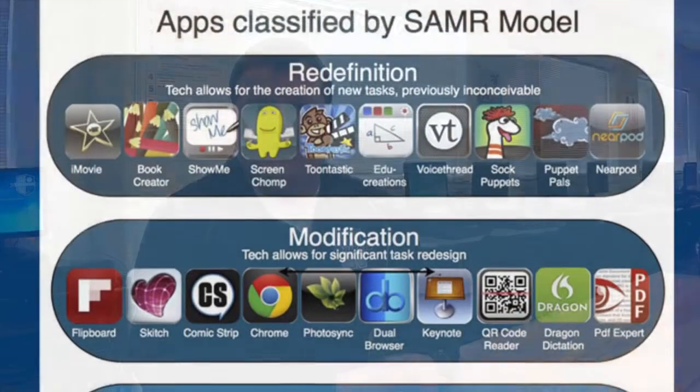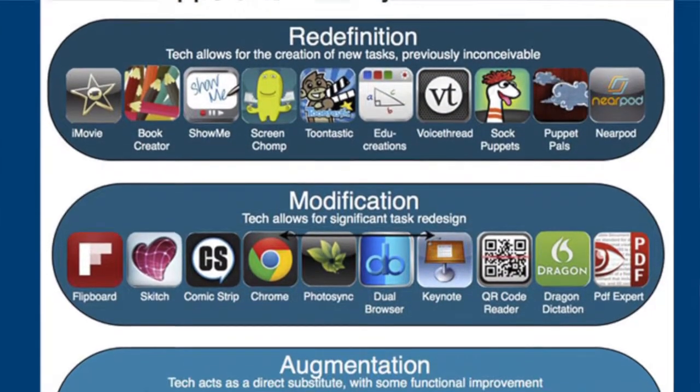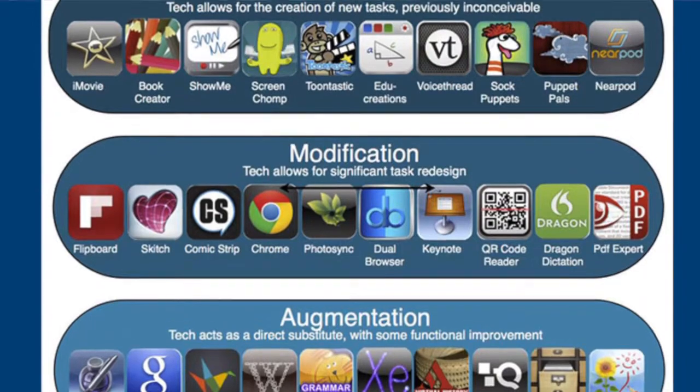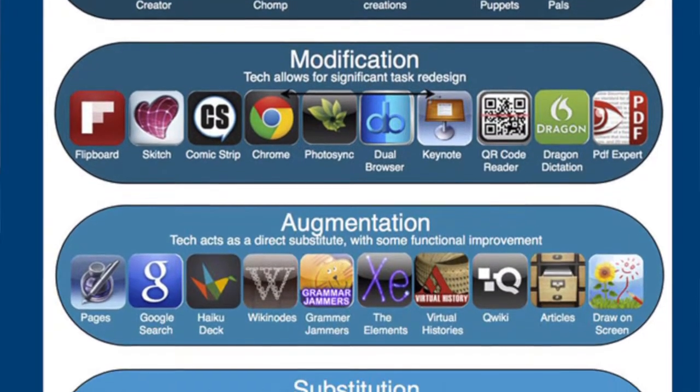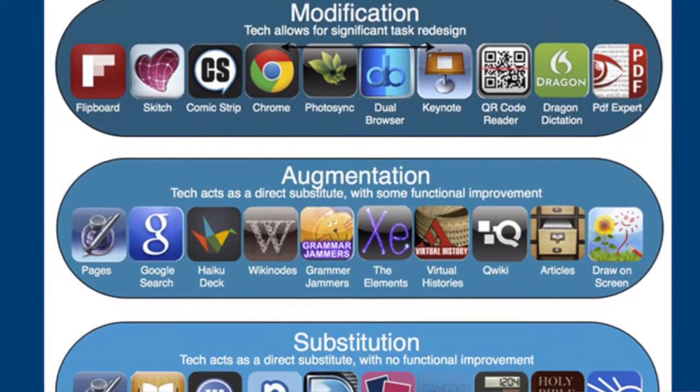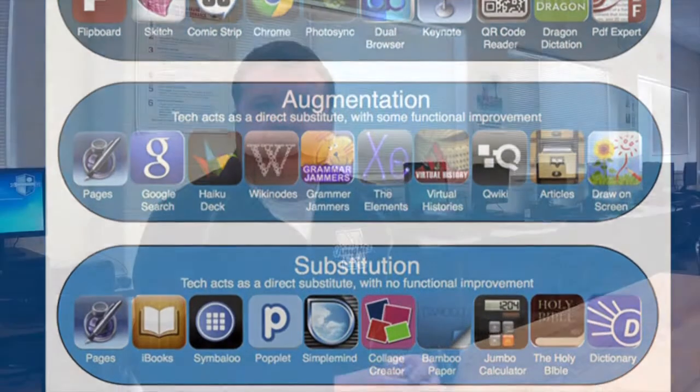I was in charge of introducing to the staff the SAMR model, which I used to represent the multiple levels of differentiation that people have with technology in their classroom environment. The SAMR model represents all sorts of different levels, from very beginner to very advanced users, and the various ways that they can use technology in the classroom.